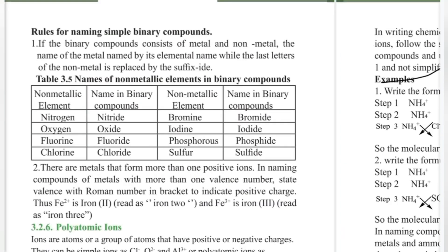Rules for naming simple binary compounds: if the binary compound consists of a metal and a non-metal, the name of the metal is the name of the element, while the last letters of the non-metal name are replaced by the suffix '-ide'.